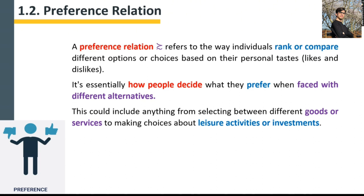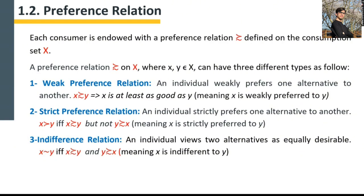Or between different investment options — for example, investing in Meta stock or Tesla stock, investing in Microsoft stock or Apple stock, investing in Samsung stock or LG stock. There are different options you can compare. This is the preference relation. Each consumer is endowed with a preference relation defined on a consumption set.